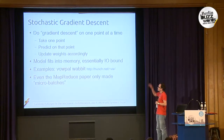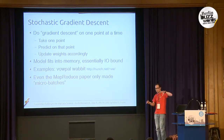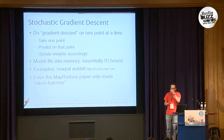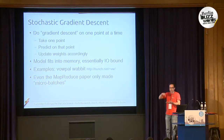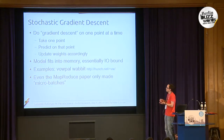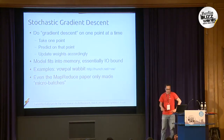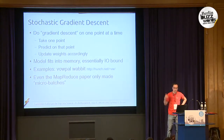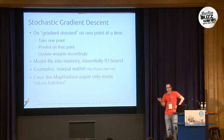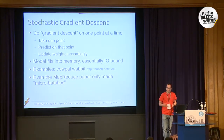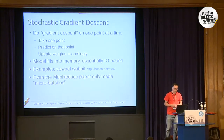The only thing you need to keep in memory are the weights — maybe one million of them, but that's really nothing. Then you just stream your data past your model and do gradient descent on each point. There's an example called Vowpal Wabbit, an algorithm by John Langford, which is very good at this and leads to very good predictions. Essentially it's I/O bound — the bottleneck is reading all the data as fast as possible.